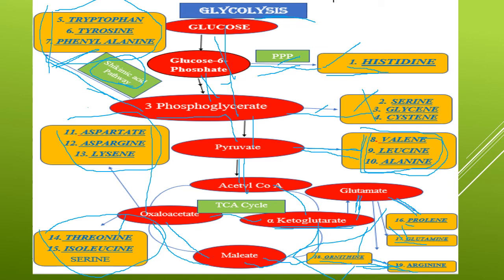From glycolysis: glucose is converted to glucose 6-phosphate, which enters into the pentose phosphate pathway and the first amino acid obtained is histidine. After a few steps, glucose 6-phosphate is converted to 3-phosphoglycerate, and from there serine, glycine, and cysteine are obtained. This 3-phosphoglycerate also enters into the shikimic acid pathway, and from shikimic acid pathway three different amino acids are synthesized: tryptophan, tyrosine, and phenylalanine.